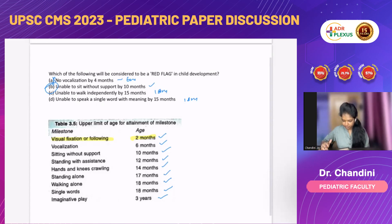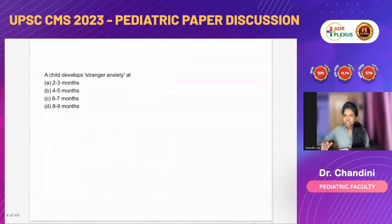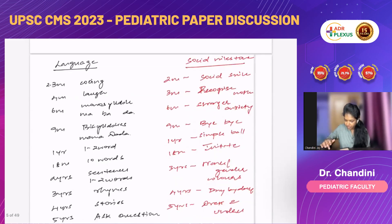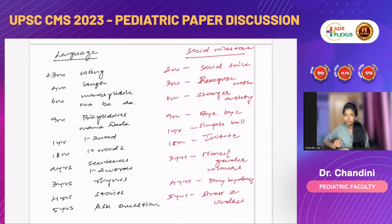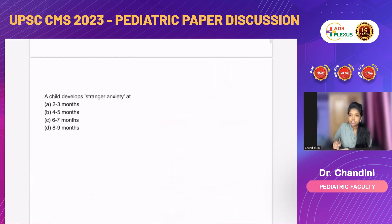The next question: a child develops stranger anxiety. Stranger anxiety means that on seeing a stranger, the child develops anxiety — crying and becoming fussy on seeing someone new. The answer for this question is six to seven months, as stranger anxiety comes around six months of age. So, option C is the answer.